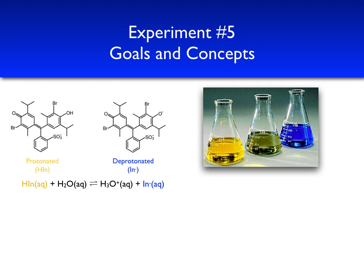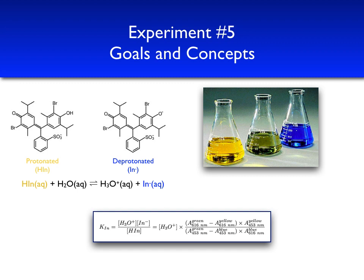We can write an equilibrium constant expression for this equation. We call this equilibrium constant KIN, or the indicator's acid ionization constant, which is equal to the H3O+ concentration times the concentration of IN- over the concentration of HIN. In your lab manual, a derivation is present that shows that through the Beer's Law relationship, you can express this equilibrium constant in terms of the hydronium ion concentration and a ratio between some absorbances that will be measured by taking three spectrums. One spectrum of the green solution, where the concentrations of both of the protonated and deprotonated species are about equal, and then of the yellow and blue solutions, where for the yellow solution, the concentration of HIN is high, and in the blue solution, the concentration of IN- is higher.